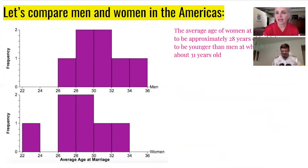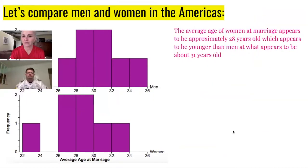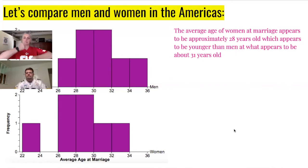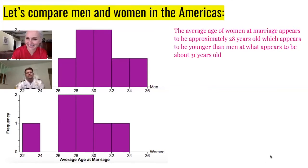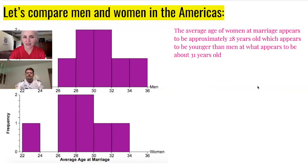The average age of women at marriage appears to be approximately 28 years old, which appears to be younger than the men at what appears to be 31 years old. This is comparing the median age of men to the median age of women from countries in the Americas. The comparative word here is 'younger' — you could also say 'less than' or 'greater than.'